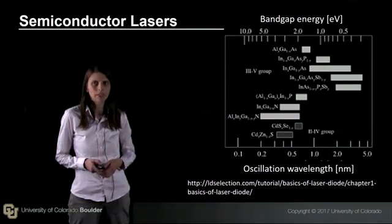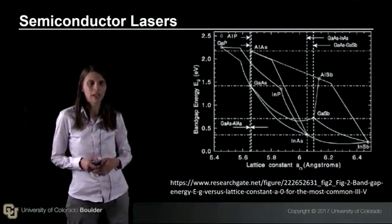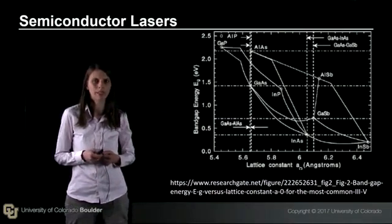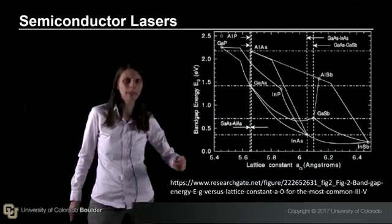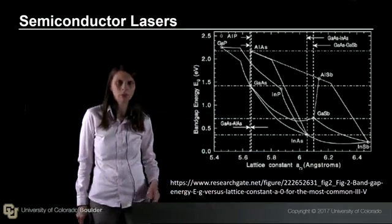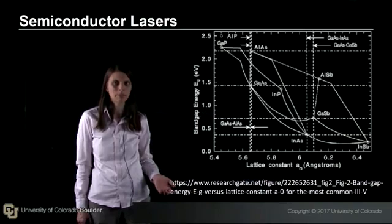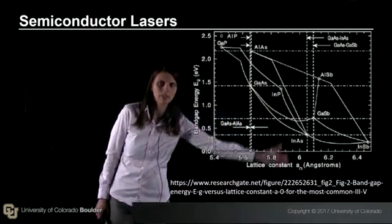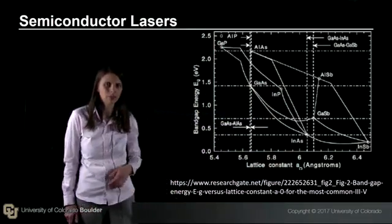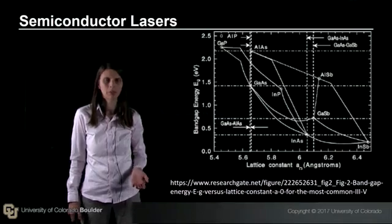Semiconductor lasers are really dictated by lattice matching. They are based on having radiative transitions where an electron and a hole recombine and emit a photon, which requires high quality material. This chart shows band gap energy versus lattice constant. To demonstrate a high quality semiconductor laser, we need to grow lattice matched materials, which limits the type of compounds we can use and the substrates we can grow on. By staying on the vertical lines of this chart, we can grow lattice matched material capable of lasing transitions.